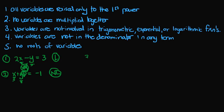In our third example, we have the equation 2x minus 5xy is equal to 0. Our variables are x and y, but in the second term, 5xy, we have two variables multiplied with one another — x times y — and that makes this equation nonlinear.